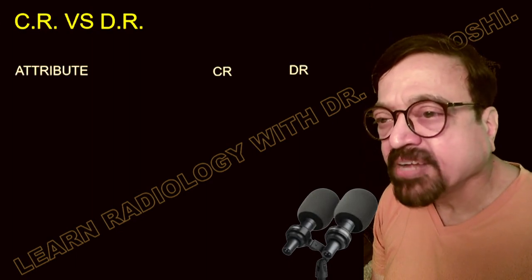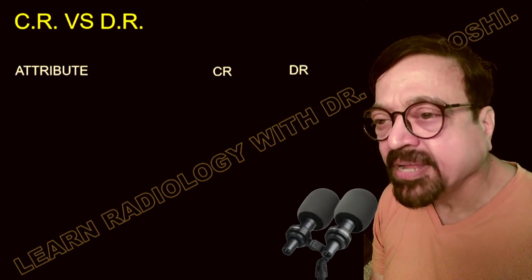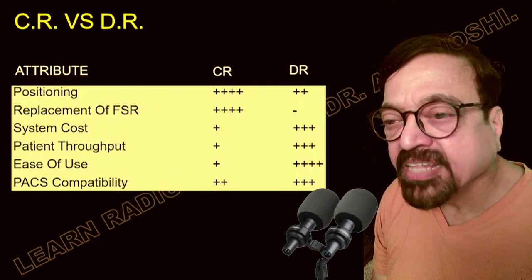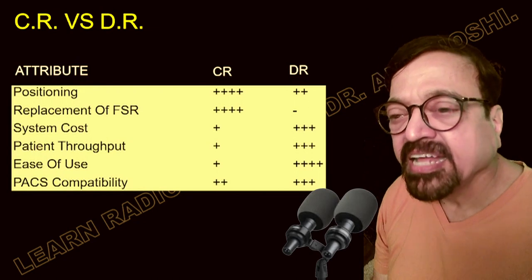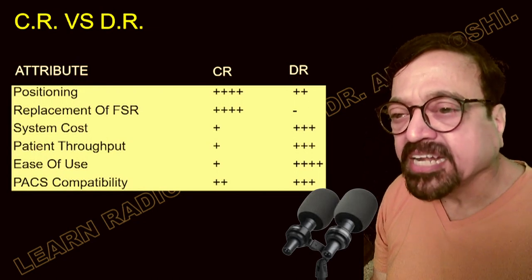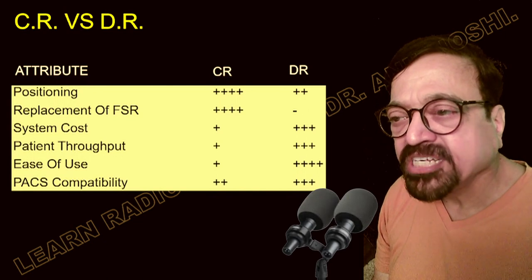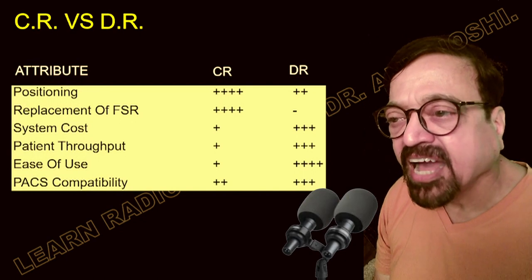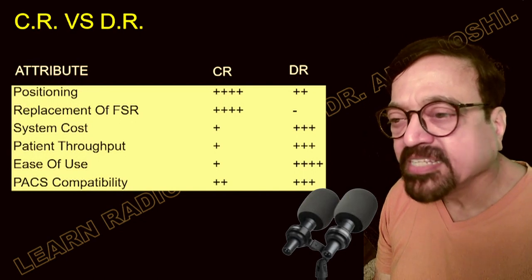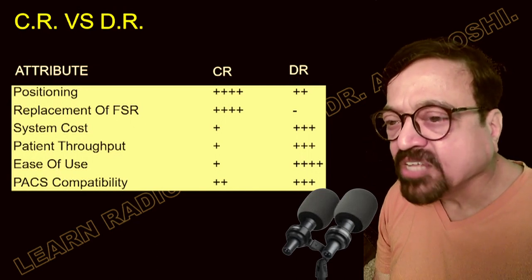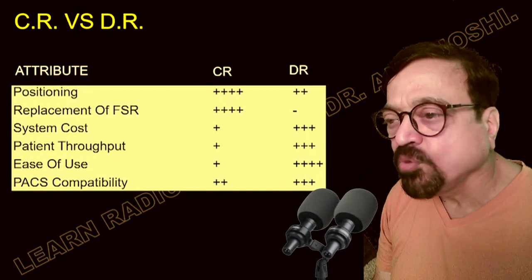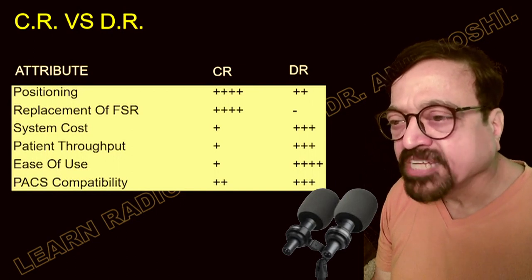Comparing CR and DR: in CR, positioning must be more accurate because cassettes must be slotted into the machine, whereas in DR the patient simply stands in front of the machine. Replacement of the image receptor (FSR) is needed more frequently in CR. System cost is higher with DR — the only limiting factor today — but that cost will come down over time.